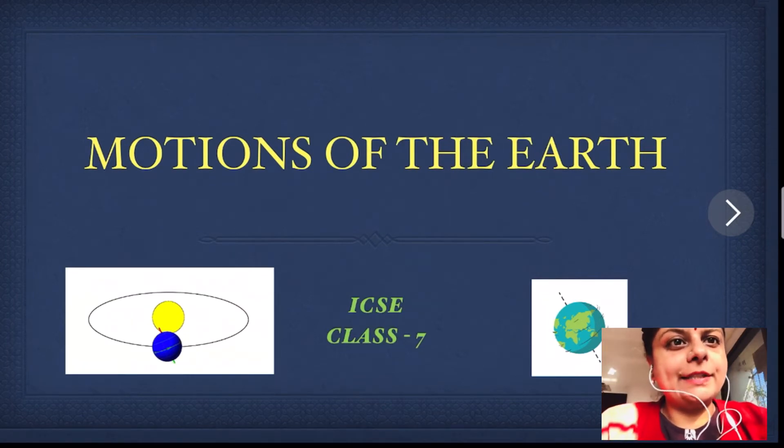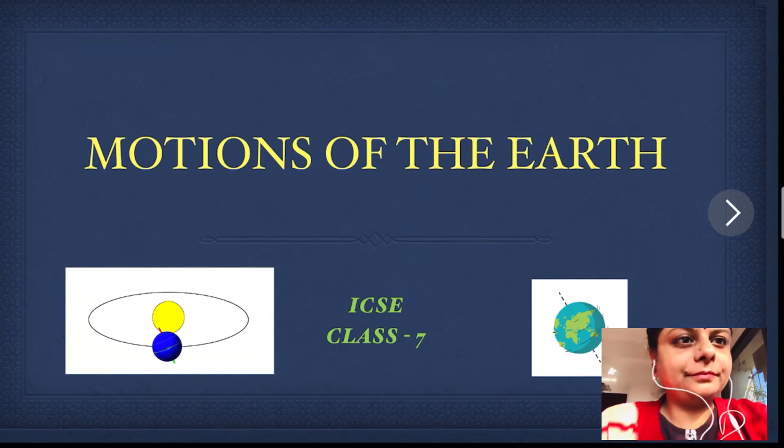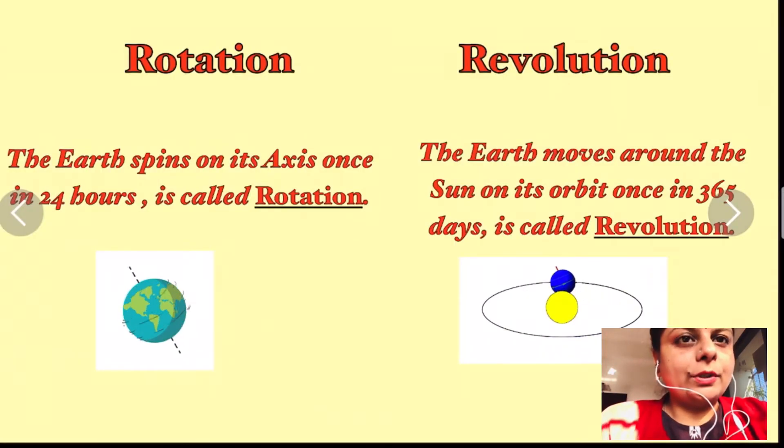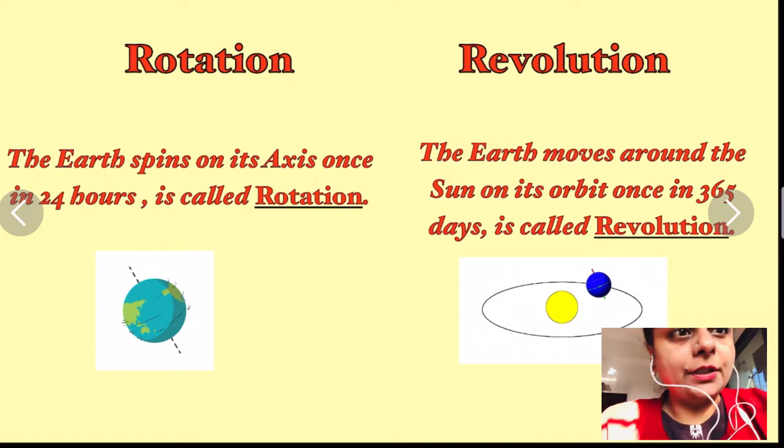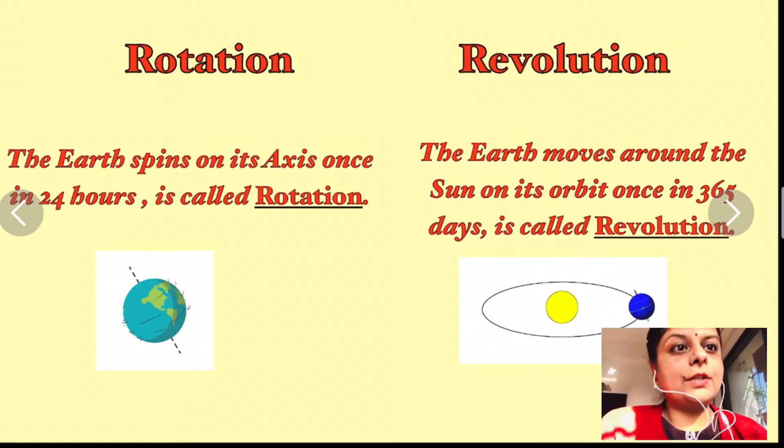Hello everyone, in today's video we will be learning about motions of the Earth. Let's see rotation and revolution. The Earth spins on its axis once in 24 hours, which is called rotation. The Earth moves around the Sun on its orbit once in 365 days, which is called revolution.